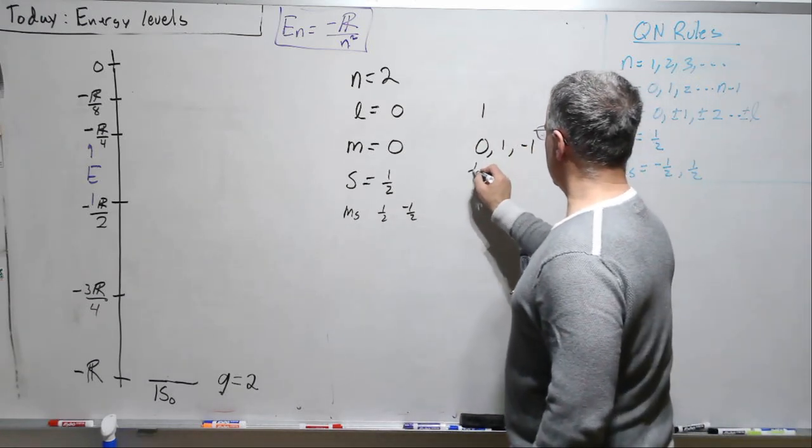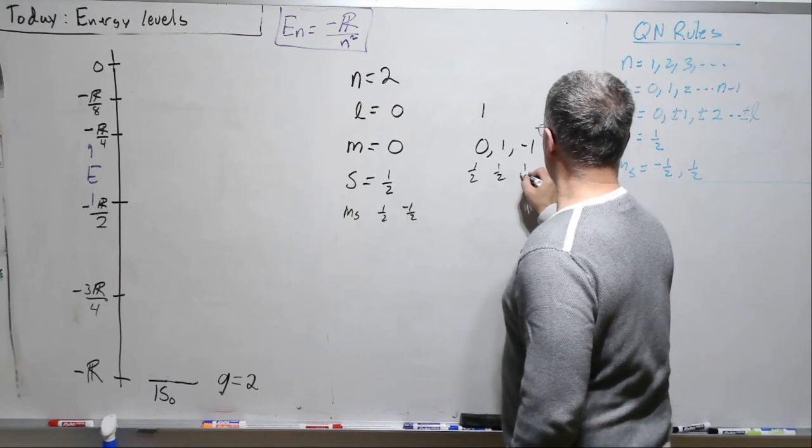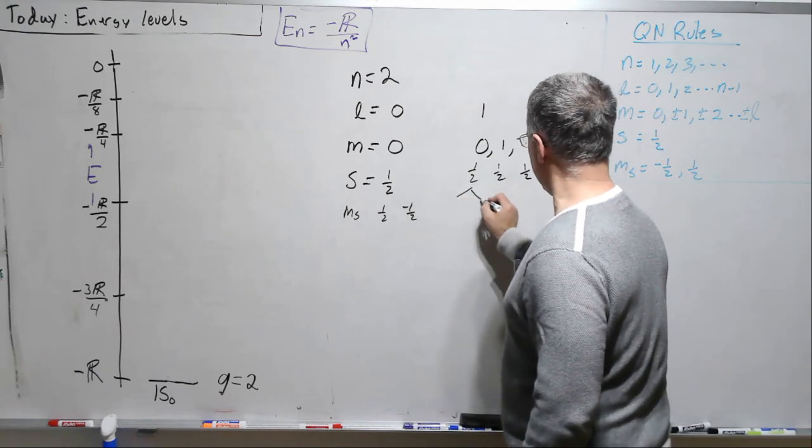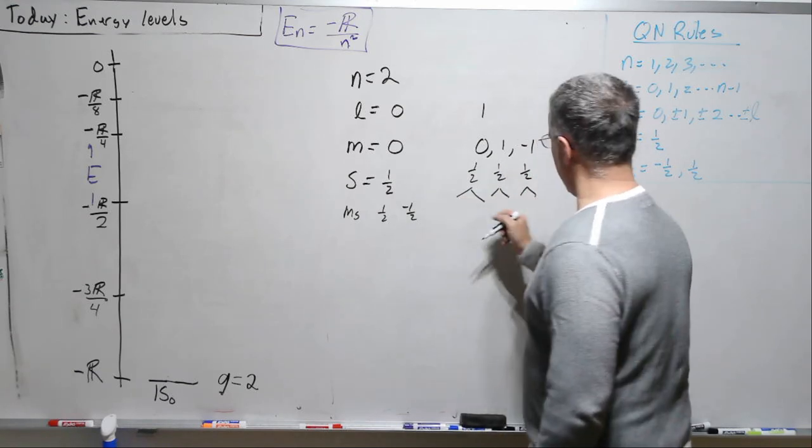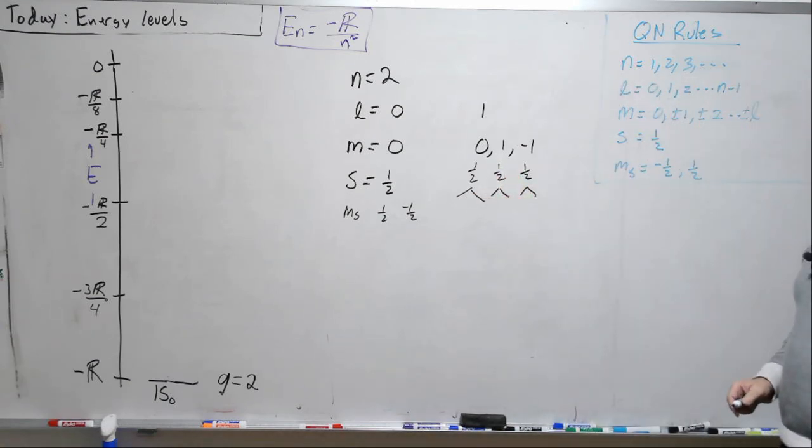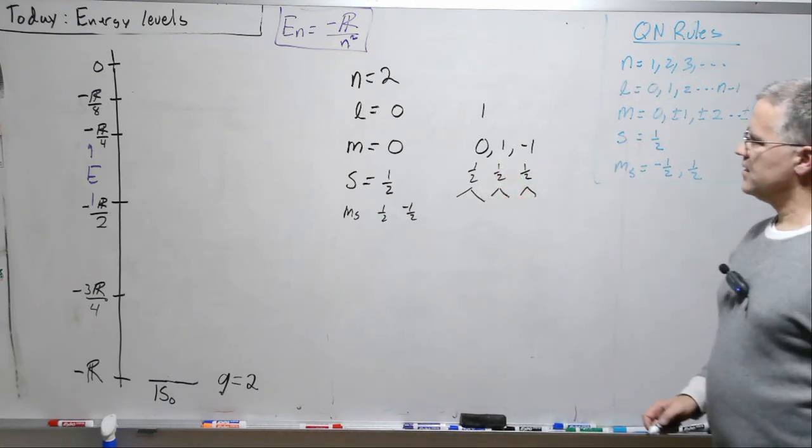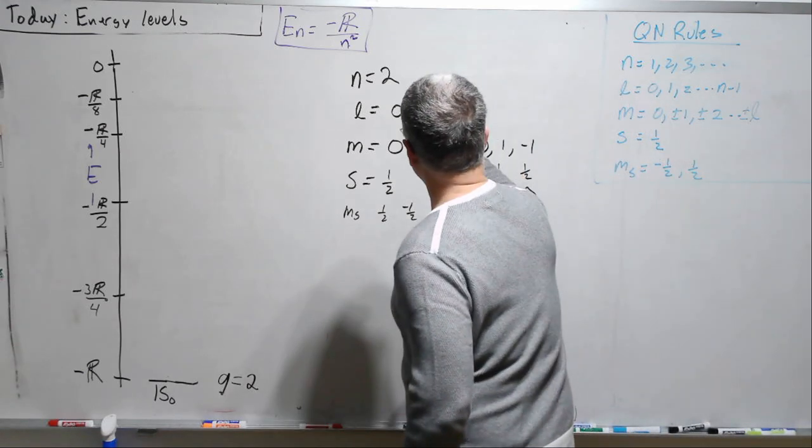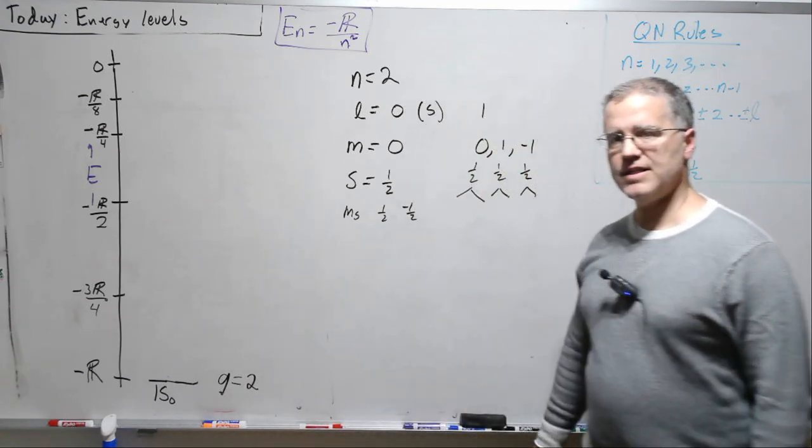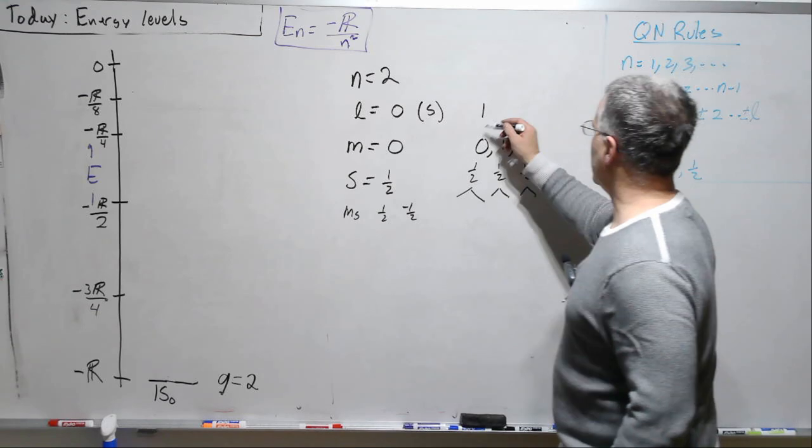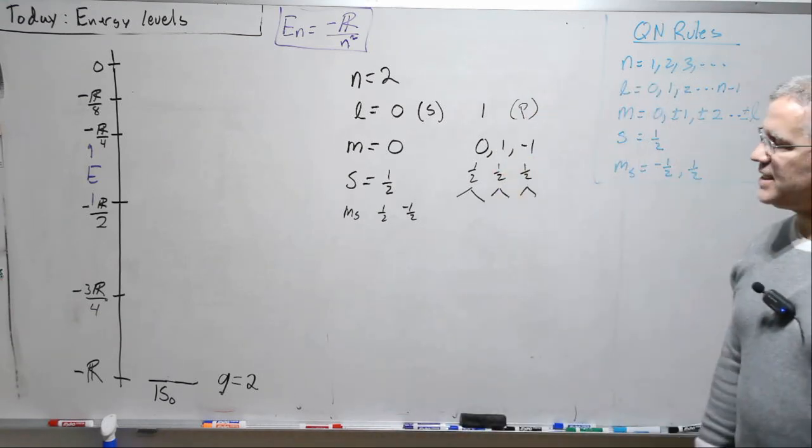s is 1/2, and ms can be 1/2 or minus 1/2. Here, 1/2, 1/2, 1/2, and then each one of these, I'm going to write it, each one of these could be plus or minus 1/2. These, L is 0, so we call that an S state. Here, L is 1, so we call these a P state.